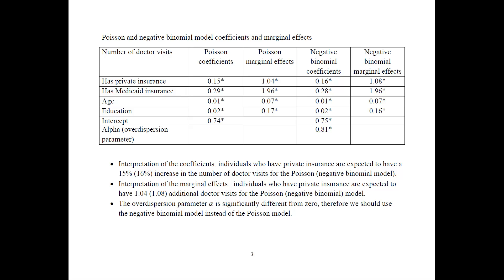On this slide I have already estimated the different models and summarized the Poisson and negative binomial model coefficients and marginal effects. The stars in this table denote statistical significance. I have not put standard errors, t-statistics, or R-squared here, but you should include those in your paper. The first model is the Poisson model, followed by its marginal effects, then the negative binomial coefficients and marginal effects.